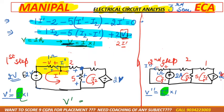For step two, there are three meshes: i1, i2, and i3. You can take the current directions either way, but it is recommended to follow the sign convention already shown. Since there are three mesh variables plus the dependent source, you need to write four equations total to find i-double-dash.